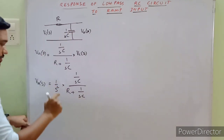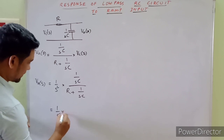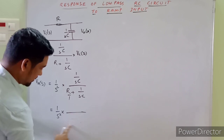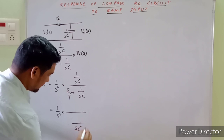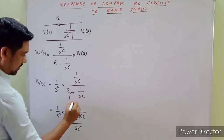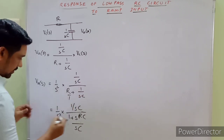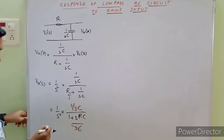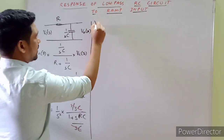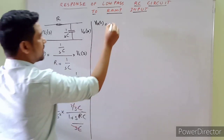Substituting the ramp input, V₀(s) equals [1/s²] × [1/(sC)] / [R + 1/(sC)]. Simplifying: multiplying through, SC in the denominator cross-multiplies to give 1 + sRC in the denominator, and 1/(sC) in the numerator cancels, simplifying the expression further.